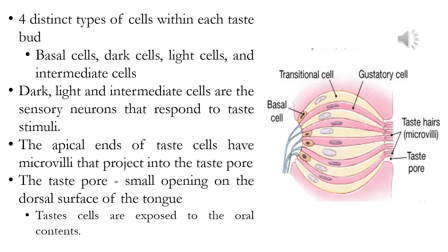Within the taste bud there are four distinct cell types. Starting from the bottom, we have the basal cells shown in brown in the diagram. Moving up, we have what are known as dark, light, and intermediate cells. Then we have the sensory cells themselves, here named as gustatory cells, shown in pink. In between these are supporting cells or transitional cells.